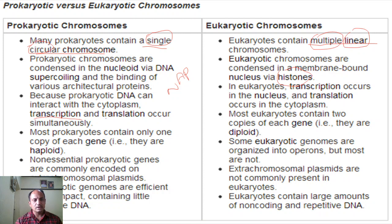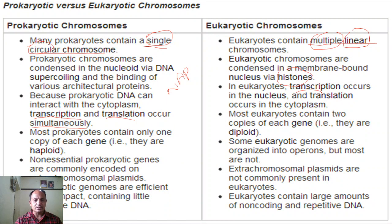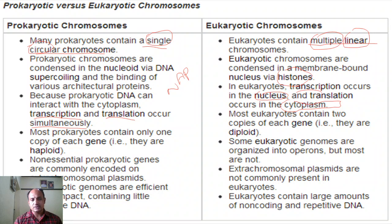Because prokaryotic DNA can interact with the cytoplasm, transcription and translation occur simultaneously. In eukaryotic cells, transcription occurs in the nucleus and translation occurs in the cytoplasm — they are spatially separated. Many prokaryotes contain only one copy of each gene, meaning they are haploid (N).